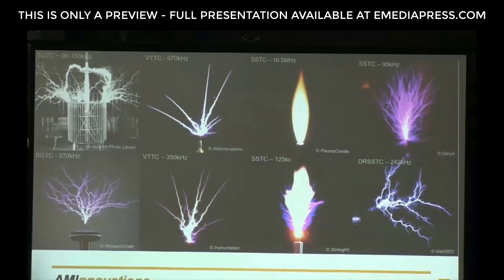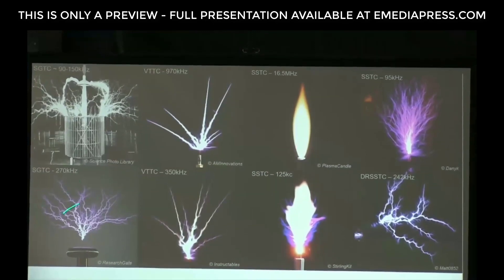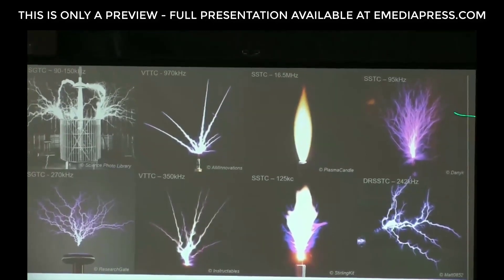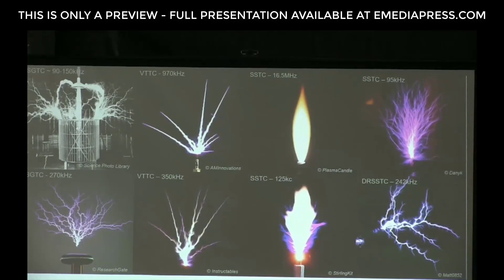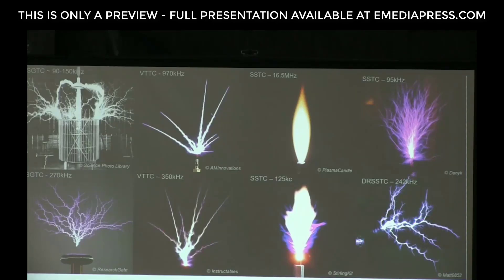That's a very nice fractal — looks very much like lightning. And then some other things in between: this is a very high frequency solid state Tesla coil running at 16.5 megacycles, and it just looks like a candle flame. And another solid state Tesla coil — more of a bush, the burning bush — which we saw in the previous demonstration earlier in the week. And a dual resonance solid state Tesla coil.